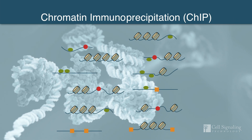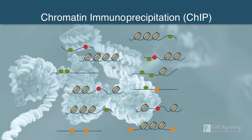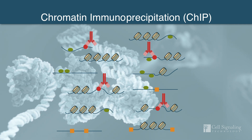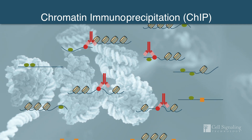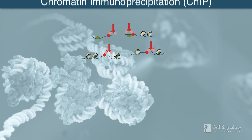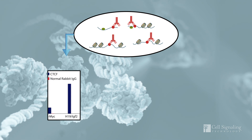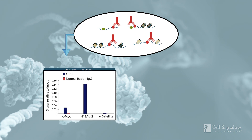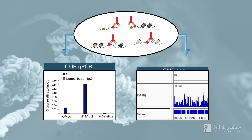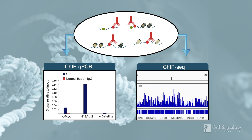Chromatin immunoprecipitation, or ChIP, enables the accurate detection and quantification of protein-DNA interactions by immuno-enrichment of protein bound to DNA. The enriched DNA is then purified and analyzed by qPCR, or next-generation sequencing, to investigate epigenetic changes that regulate gene expression.